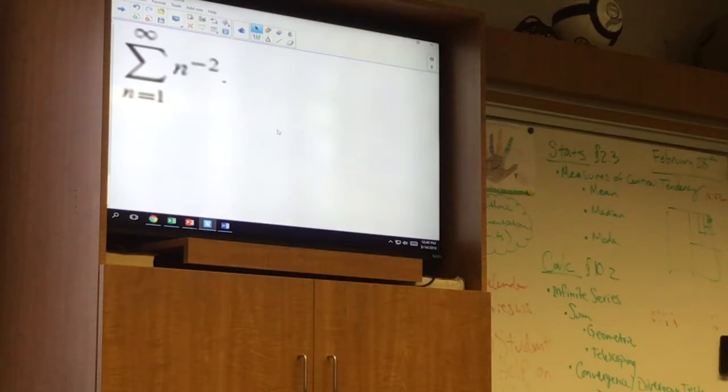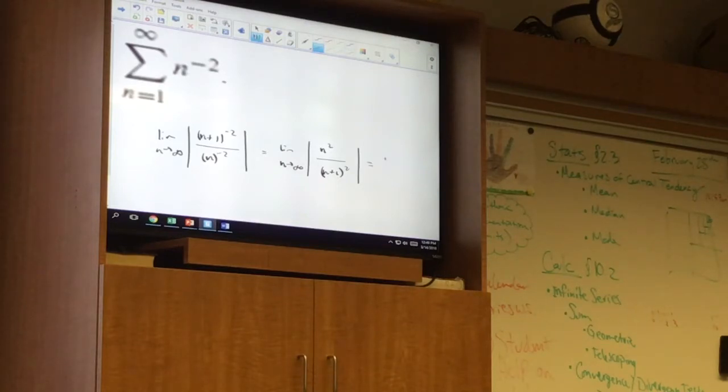We take the limit as n approaches infinity of absolute value of n plus 1 to the negative second over n to the negative second, which is equal to the limit as n approaches infinity of n squared over n plus 1 squared. Do you see that? I can bring that down to the denominator and then make the exponent positive, and that up to the numerator and make the exponent positive. And then what's this equal to? 1, uh-oh, inconclusive.